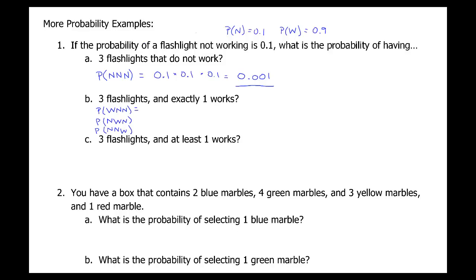P(working) = 0.9 and P(not working) = 0.1. Multiplying the probabilities of each event: case 1 is 0.9 × 0.1 × 0.1; case 2 is 0.1 × 0.9 × 0.1; case 3 is 0.1 × 0.1 × 0.9. Each of these multiplies out to 0.009. Adding all three together gives 0.027.